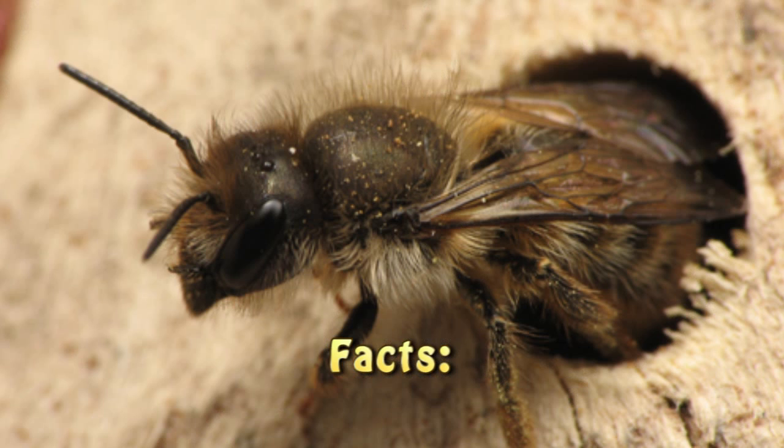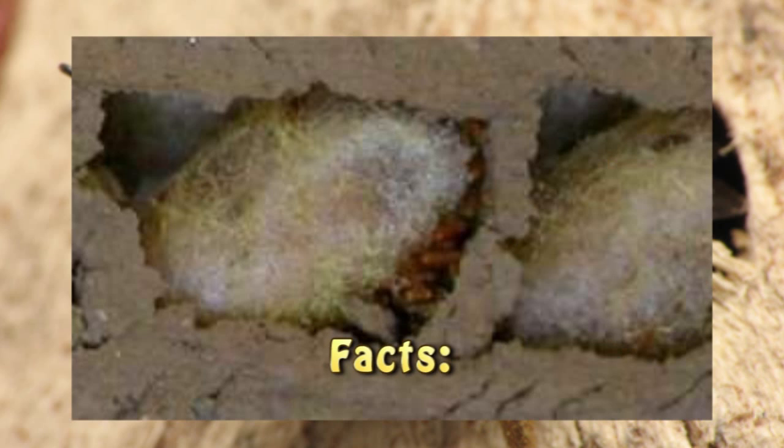The mason bee needs mud to make little mud plugs after it lays each egg. You can notice here in this picture the mason bee leaving the hole. This hole is where she lays her eggs. And after she lays her eggs and packs pollen around it and nectar, she will go get mud and then put a mud plug and then she'll start the whole process over again.